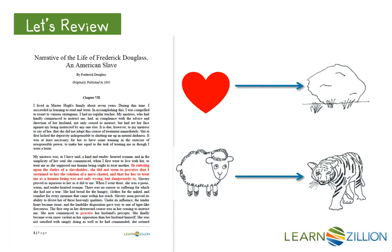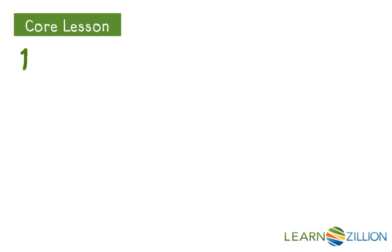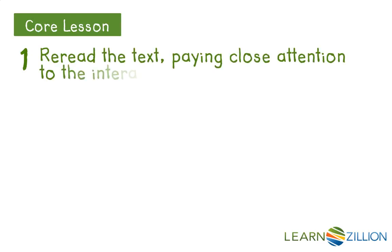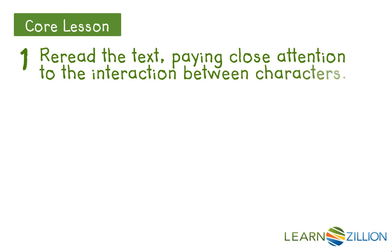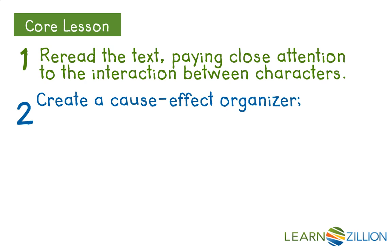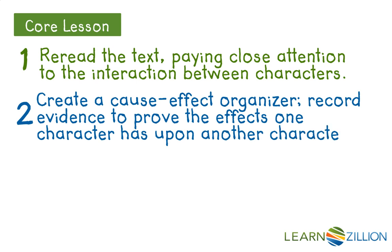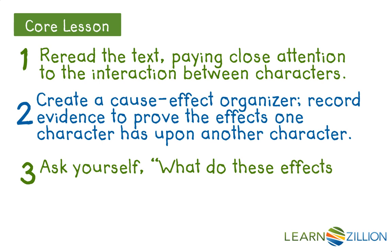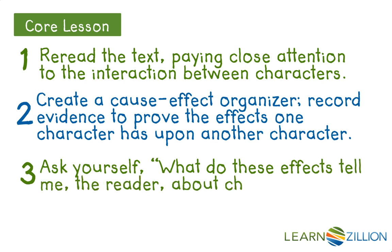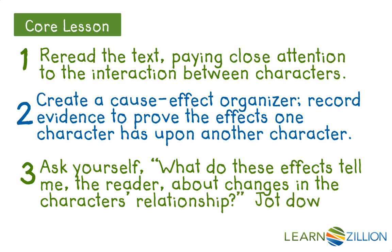In this lesson we will be exploring how the change in Mistress Hugh affected Frederick. We'll use three steps. Number one, we will reread the text paying close attention to the interaction between characters. In step two, we will create a cause-effect organizer and record evidence to prove the effects one character has upon another character. Finally, in step three, you'll want to ask yourself what did these effects tell me, the reader, about changes in the characters' relationship. You'll also want to jot down your conclusions.